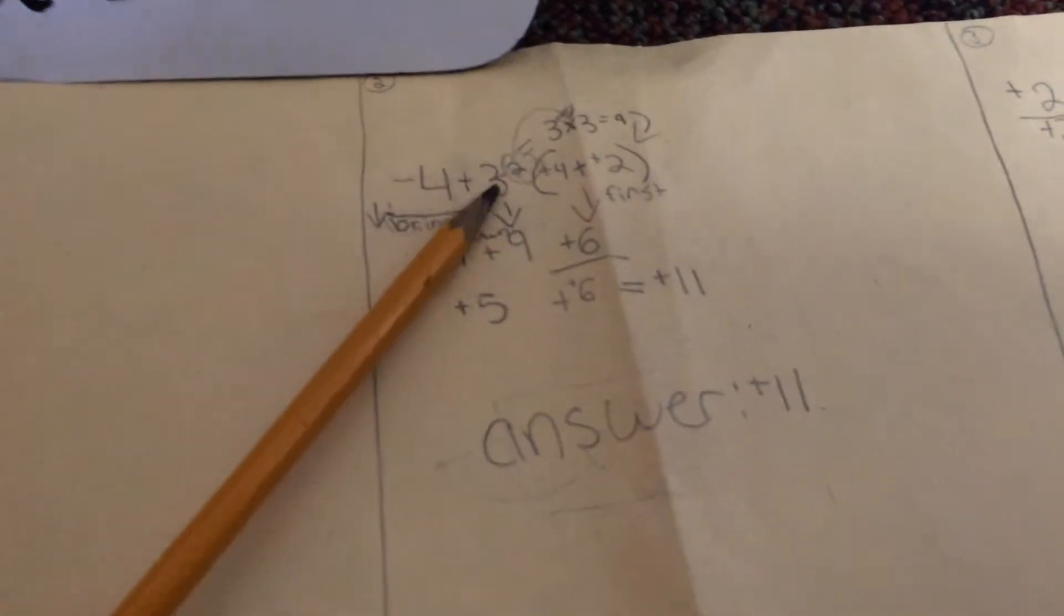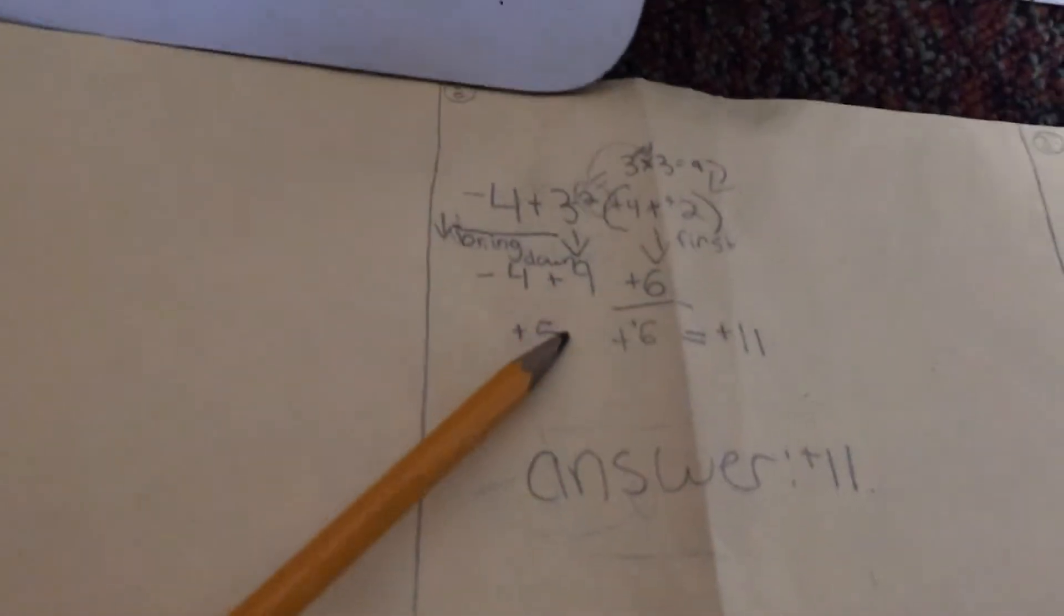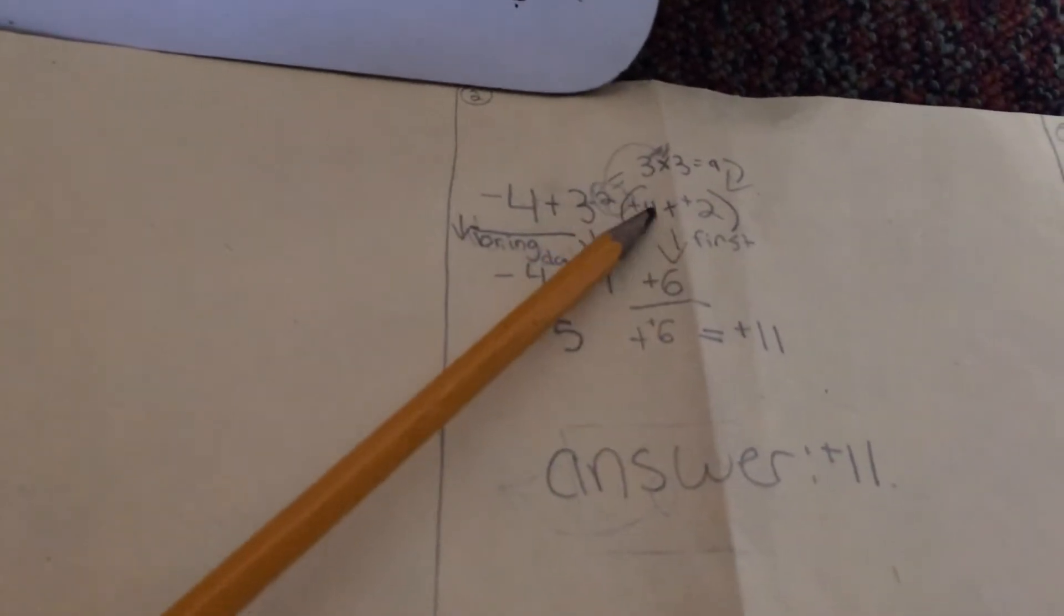And then four plus three, the three is the two. You times the three, two times, so it'll be nine. And you do that. And then four. And then you put the thingy down.